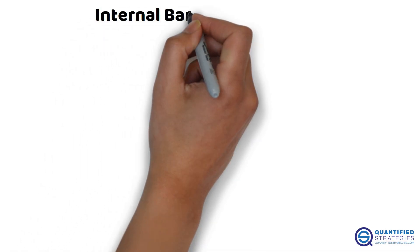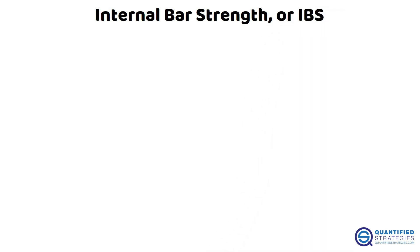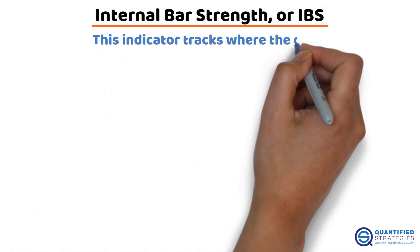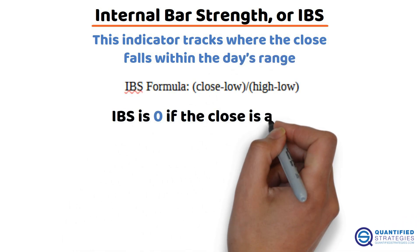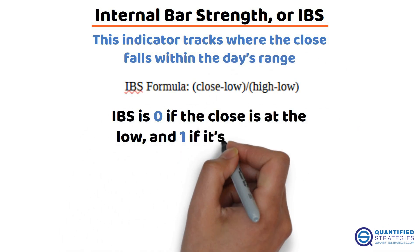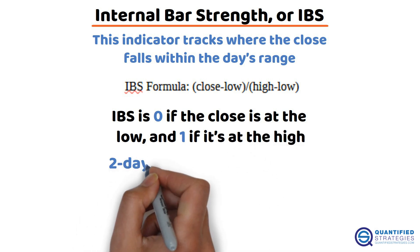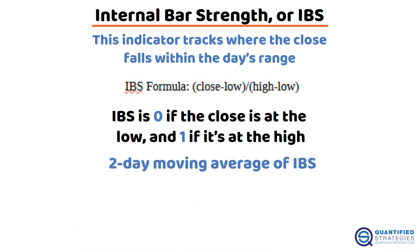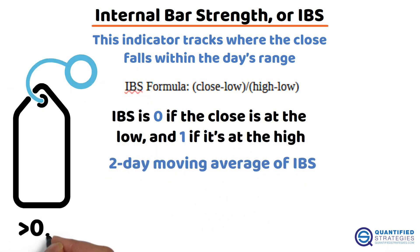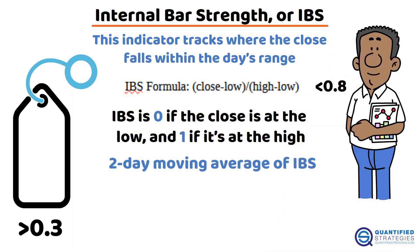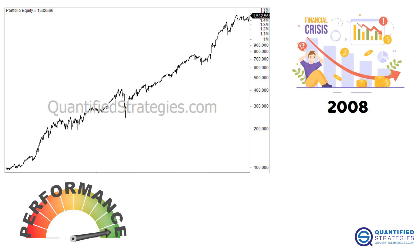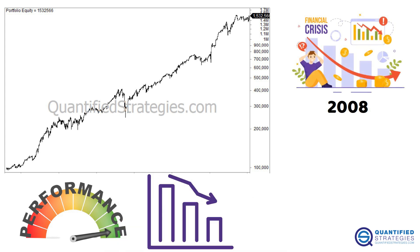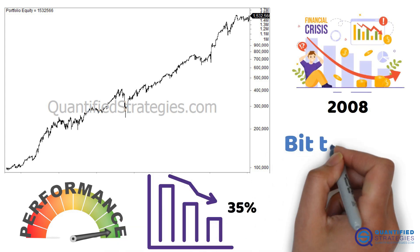Next, we have the Internal Bar Strength, or IBS. This indicator tracks where the close falls within the day's range — IBS is zero if the close is at the low, and one if it's at the high. We used a two-day moving average of IBS: buy below 0.3, sell at 0.8. Performance was decent, but during the 2008 financial crisis the drawdown was 35% — a bit too high for most.